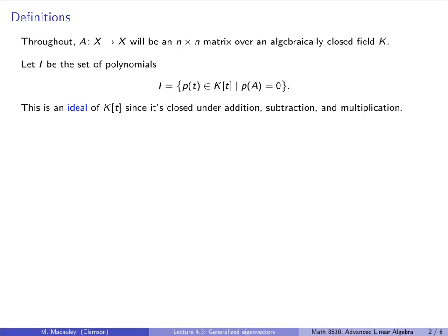If you don't know what an ideal is, loosely speaking it's a set that is closed under addition and subtraction, and also closed under multiplication by anything else. That's easy to verify: if you have two polynomials that vanish on A, so does their sum and so does their difference. If you take any polynomial that vanishes on A and multiply it by any other polynomial over K, that will vanish on A as well.